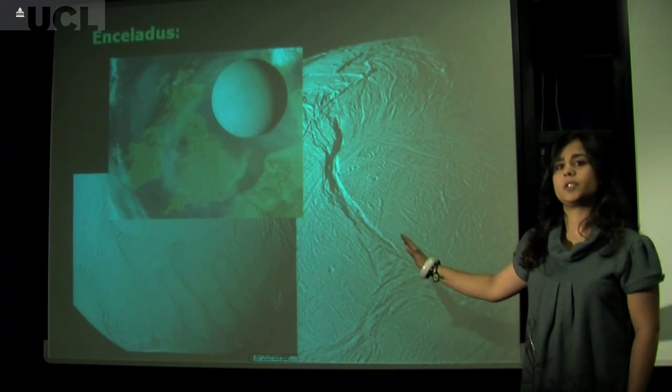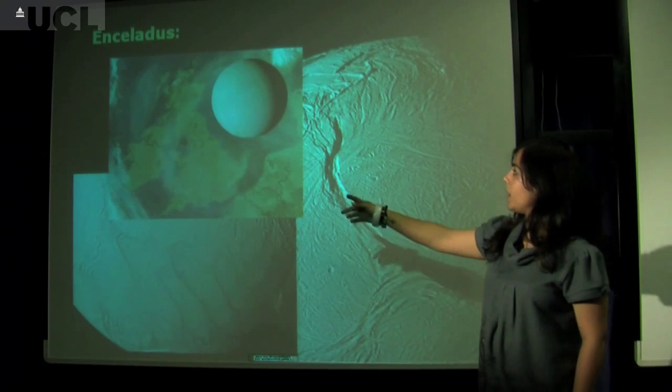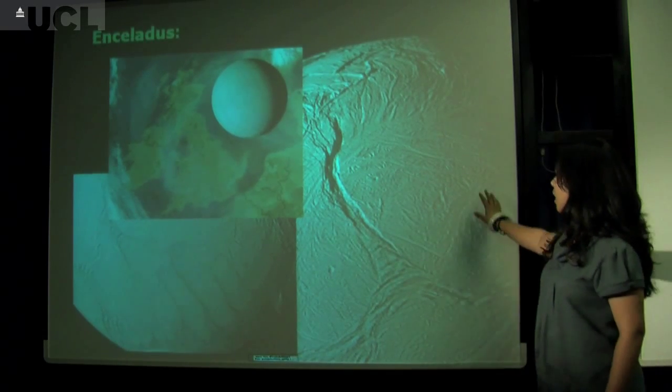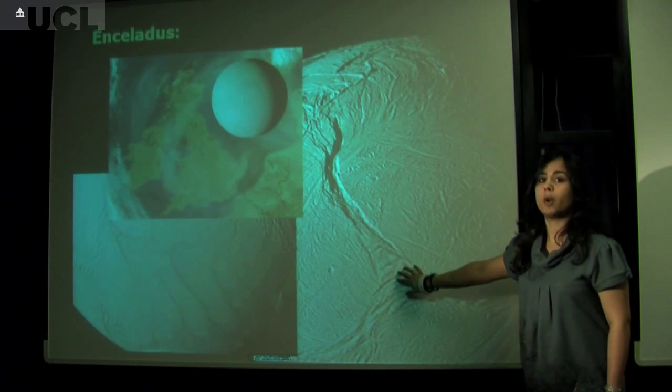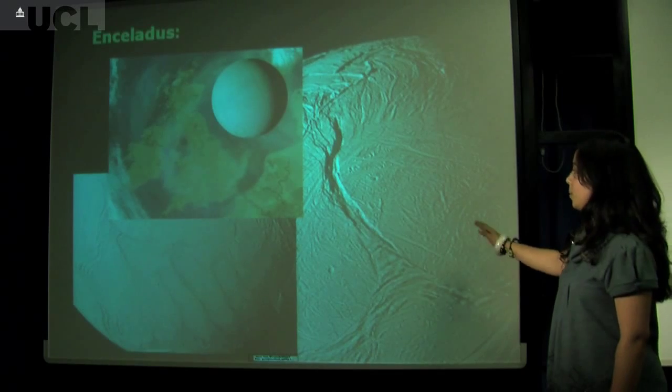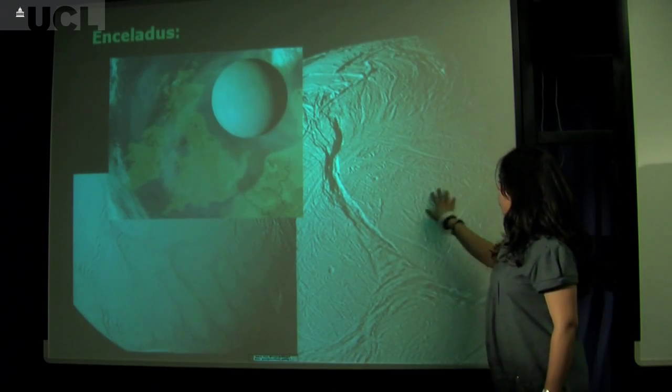Another really interesting moon is Saturn's moon Enceladus. It's about 500 kilometers wide, so about the size of the UK, and it's actually covered in a water ice crust. This picture was taken from a flyby only 50 kilometers from the moon's surface, and you can see these huge structures in the water ice of Enceladus.